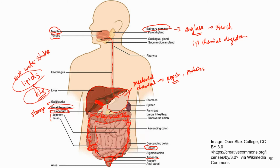The next accessory organ is the pancreas — a very important one. It is often hidden behind the stomach and small intestine and not easily visible. The pancreas secretes pancreatic juice, which contains many digestive enzymes for lipids and proteins. Just like bile, the pancreatic juice is sent to the duodenum, the first section of the small intestine. This makes the duodenum very important in digestion, as it receives both bile and pancreatic juice.